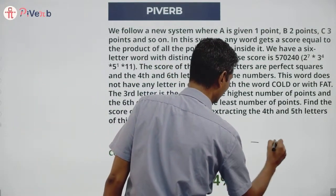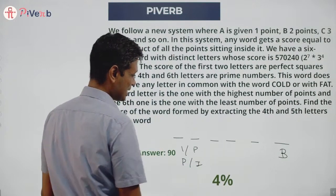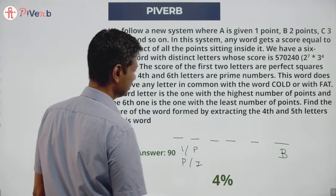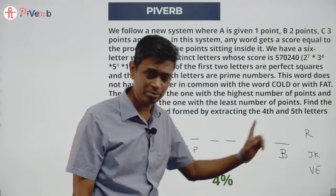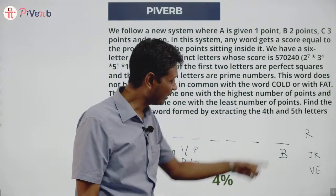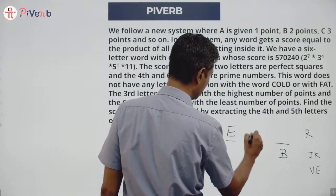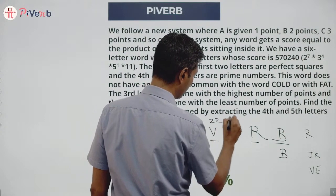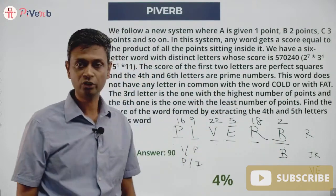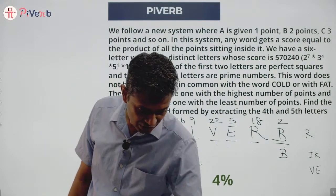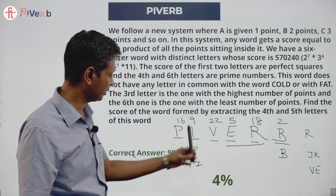The word is PIVERB: P=16, I=9, V=22, E=5, R=18, B=2. Position 3 is V=22, the highest — confirmed. Positions 4 and 6 are E=5 and B=2, both prime — confirmed. The product is 16×9×22×5×18×2 = 570240 — confirmed. The word formed by extracting the fourth and fifth letters is E and R, with score 5 × 18 = 90.